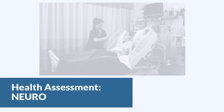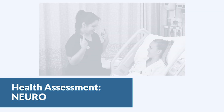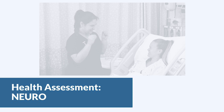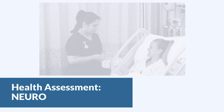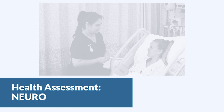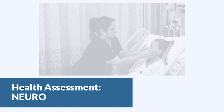In this video we're going to review how to do a full neurological assessment. There are quite a few things involved, including level of consciousness, memory, and cranial nerve testing. We're going to show you the most efficient way to get all of these things done in a coordinated fashion. Supplies you'll need are a penlight, an alcohol swab, a reflex hammer, a cotton-tipped applicator, and a Snellen chart or other visual acuity chart if available.